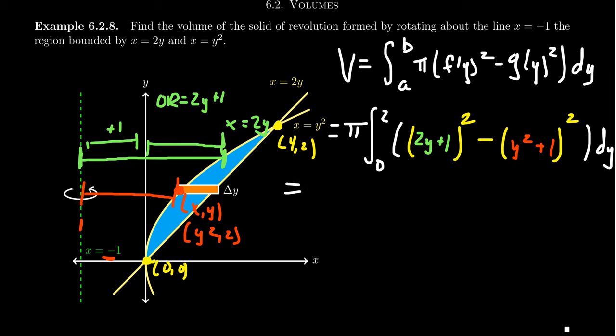Now, in order to calculate this integral, I'm going to FOIL out the (2y plus 1) and the (y squared plus 1). Make sure you do that correctly. And so upon doing that, we're going to get 4y squared plus 4y plus 1. And then from all of this, we're going to subtract the next part. We're going to get y to the 4th plus 2y squared plus 1 dy.